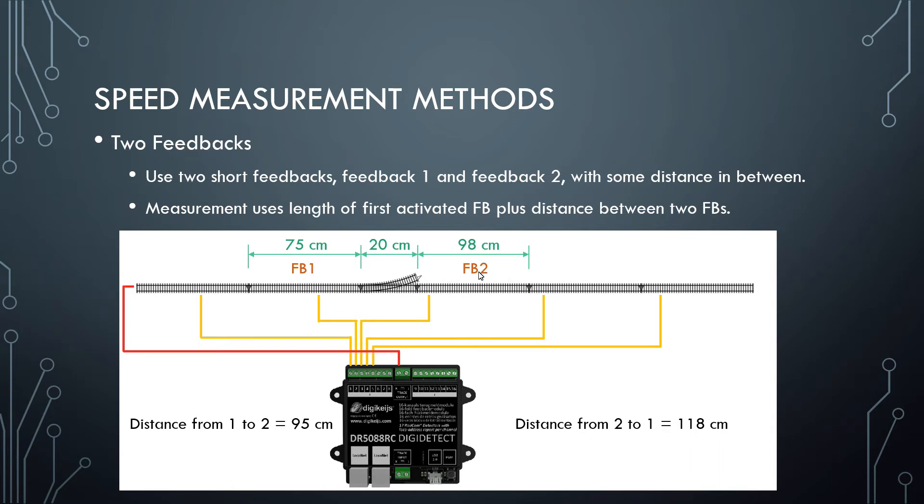The locomotive continues to run until FB2 is released. And then it's ready for the next measurement in the other direction, starting at FB2 and ending when it gets to FB1.